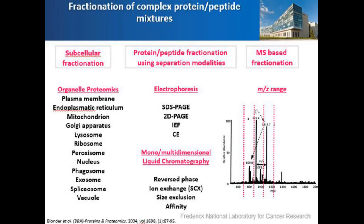There are different ways to address the dynamic range in mass spectrometry-based proteomics. The most common is subcellular fractionation — enriching for plasma membrane, mitochondria, or nuclei — so that the rest of the subcellular proteome is eliminated. You can also use different separation techniques like electrophoresis, SDS-PAGE, 2D-PAGE, or capillary electrophoresis, or different fractionation techniques like reverse phase, ion exchange, or strong ion exchange.